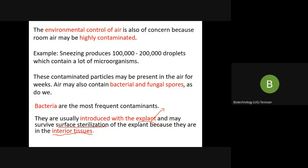To avoid contamination, we use laminar air flow, but the laminar air flow itself can get contaminated. Whenever you are placing the laminar hood, you should see that it is not directly facing the door, because doors are frequently opened. If the laminar hood is placed near the door and the door is kept open, it will get contaminated. If there is no option, you have to keep a double door so people can pass through one door before reaching the laminar hood.